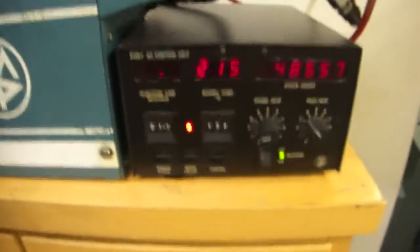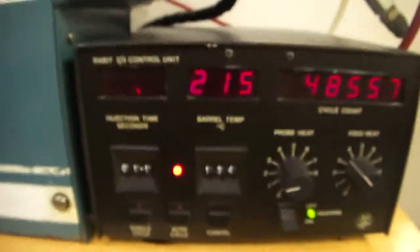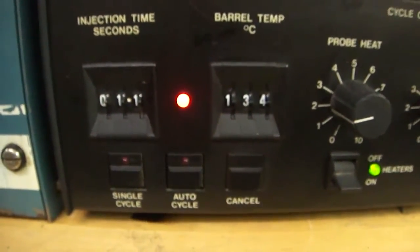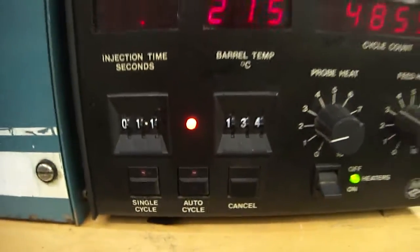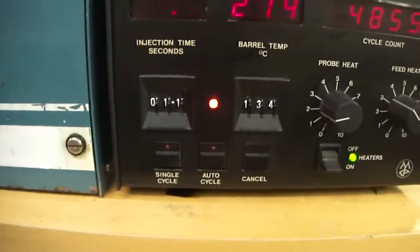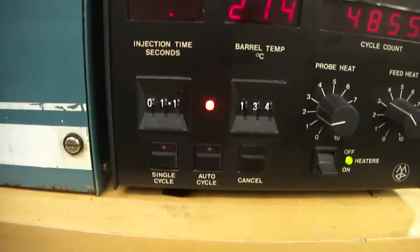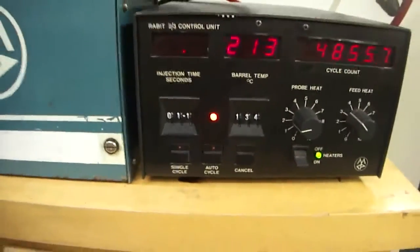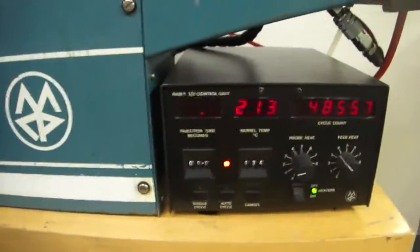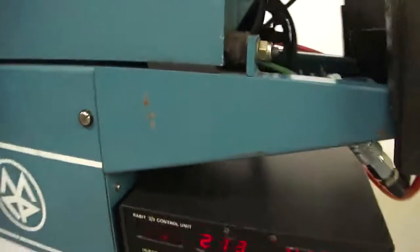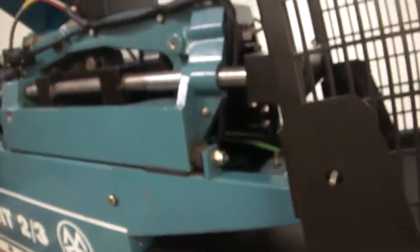We've got a functional controller. Now this controller, you can do single shot—if you look down in that left corner, it's single cycle, auto cycle, or cancel. So if you want to do just a single shot, hit the single button. If you want it to go automatically once you get your process dialed in, hit the auto cycle and it'll run 365 days a year unmanned. So this is one badass machine, fully functional.